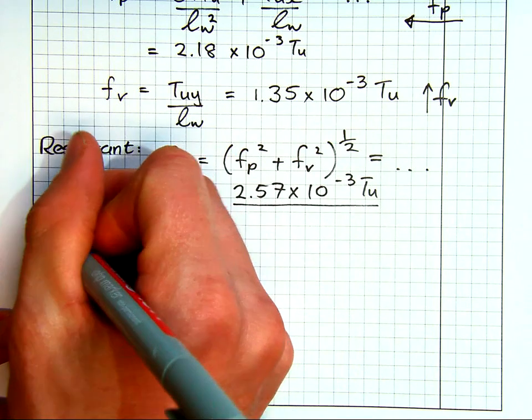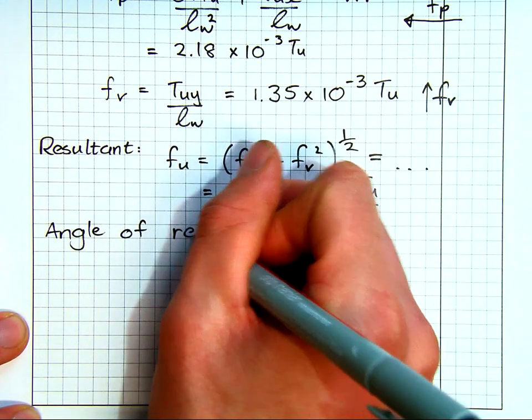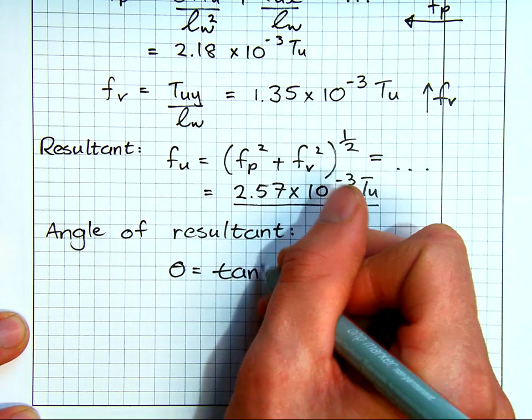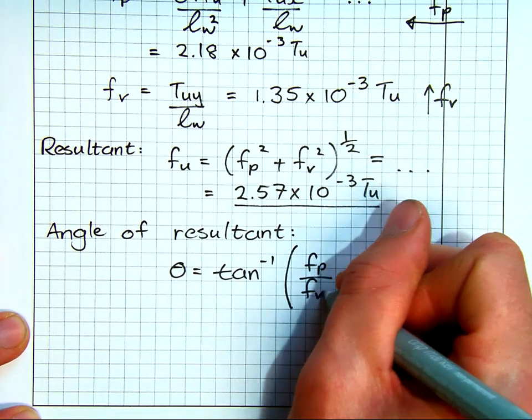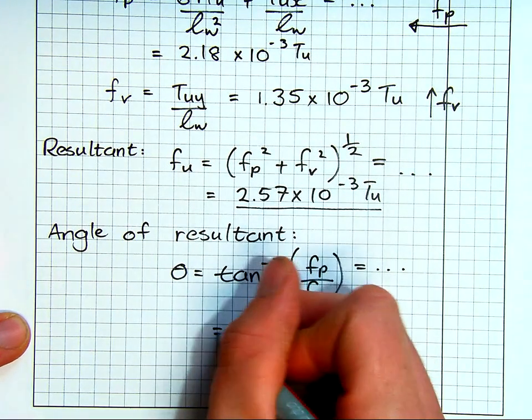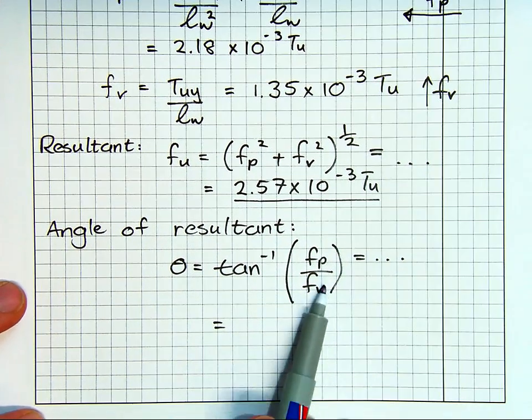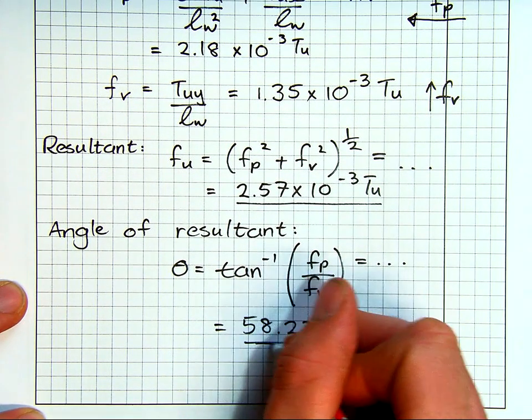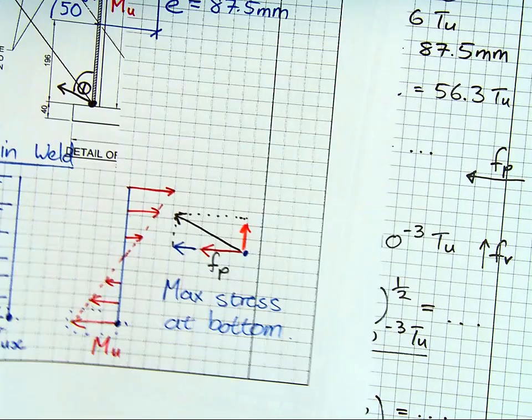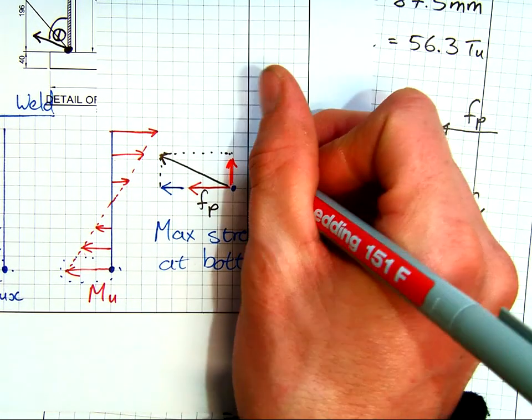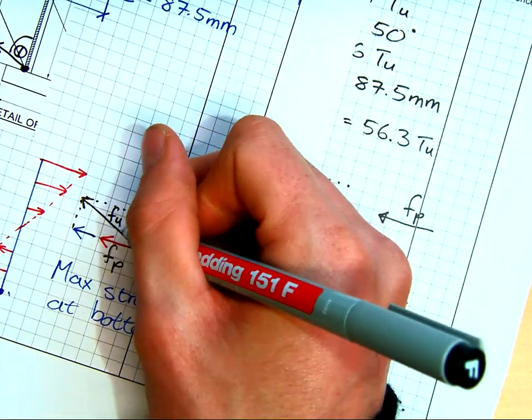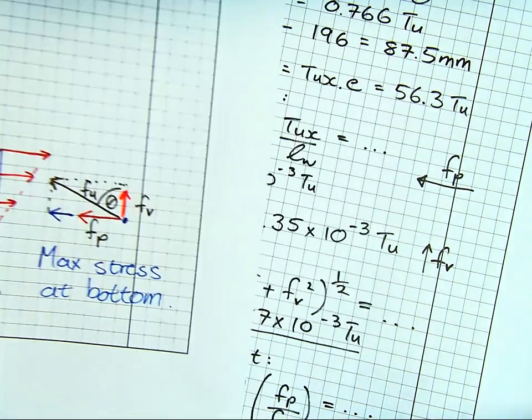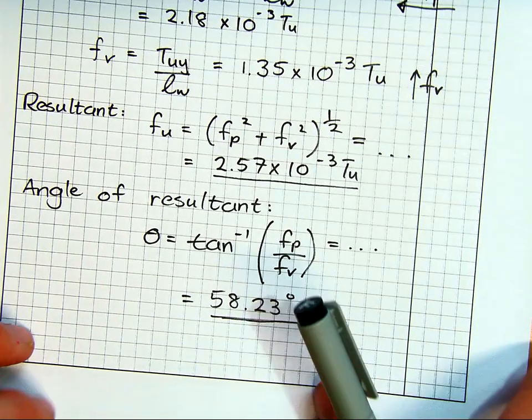Now we also need the angle of resultant. And this was the theta value I was showing you earlier that we've got theta and that's tan to the negative 1 of Fp over Fv and then fill it all in. Thankfully our Tu values cancel out. So when we get this then we end up with the angle of 58.23 degrees. So looking at what I've just shown you previously, we've solved for this, we've now got our Fp, we've got a vertical component, we've got a resultant and then we have this acting at some angle theta to the axis of the weld 58.23. So now we have all the information we need to check the capacity of our weld.